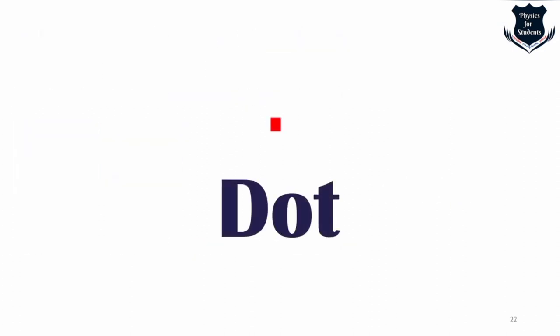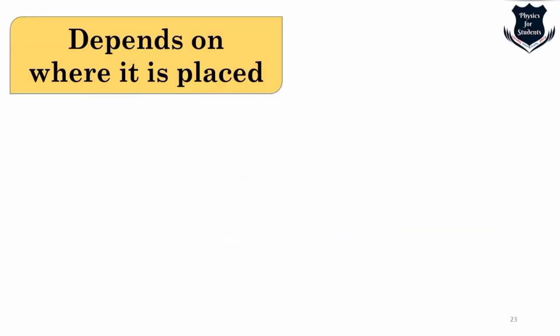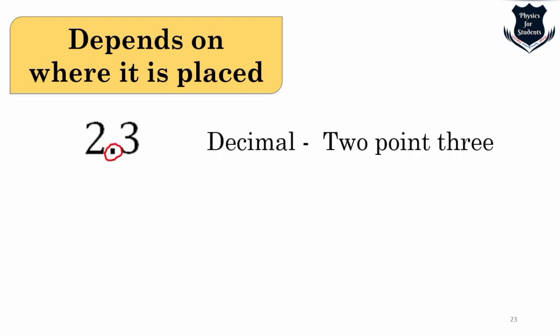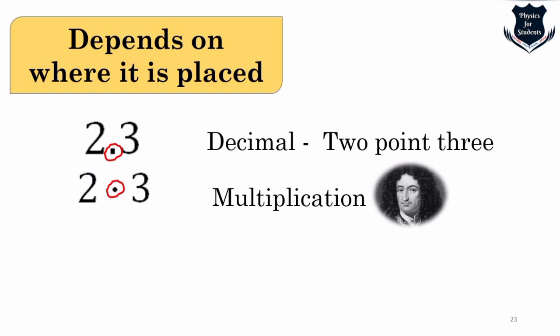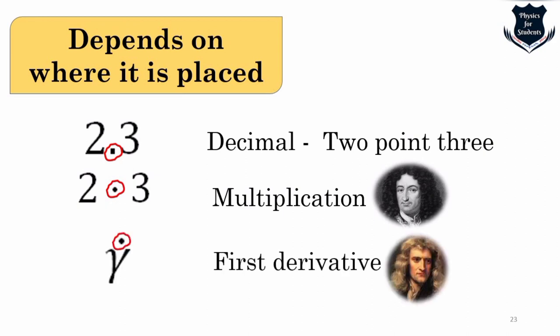The next arithmetic operator is the dot. Its meaning depends on where it is used: at the bottom of two numbers it means a decimal point (e.g., 2.3); used in the middle it means multiplication, defined by Leibniz; and placed on top of a variable it denotes the first derivative, invented by Sir Isaac Newton.